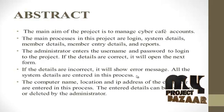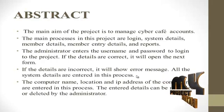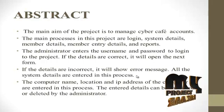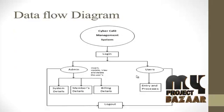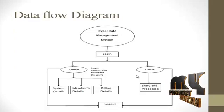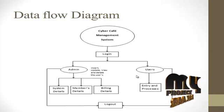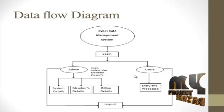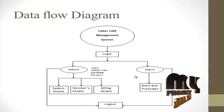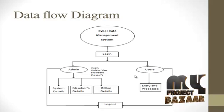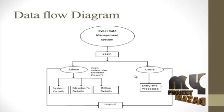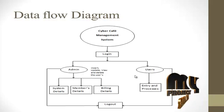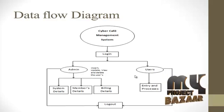The entered details can be modified or deleted by the administrator. Now let's see about the flow diagram. The CyberCafe Management System has a first process of login. The admin and user have two sections. Admin has three processes: system details, member detail, and building detail. These three processes contain insert, update, view, and delete. The user can only enter as a processor.